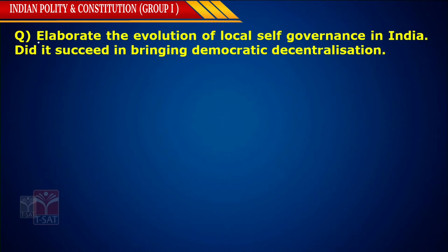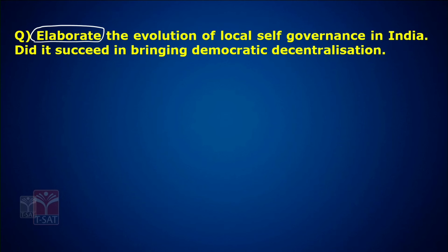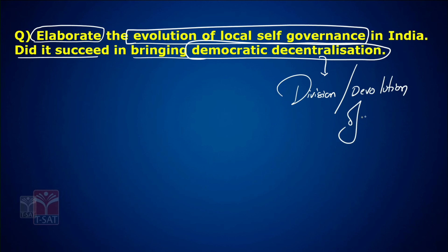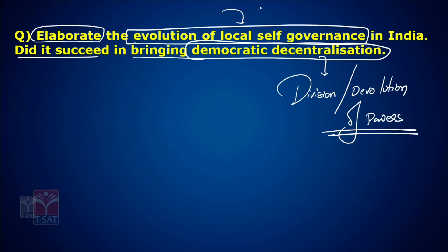Look at the first question. The first question starts with the word 'elaborate' — meaning in detail. Elaborate the evolution of local self-governance in India. Did it succeed in bringing democratic decentralization? Decentralization means division or devolution of powers — devolution of powers from centre to the states. Let us discuss the evolution of local self-governance in India.